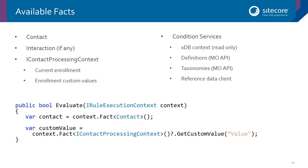The other available services are definitions, taxonomies, and the reference data client. Definitions give you access to goals, events, and other items within the marketing control panel. Taxonomies come from the marketing control panel, and the reference data client gives you access to any reference data.